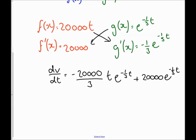As you can see, I've got e to the minus a third t in both bits, I've also got 20,000 in both bits, so I might want to factorise that out. I might want to say this is equal to 20,000 e to the minus a third t.